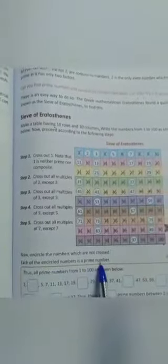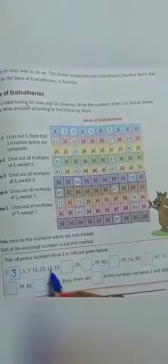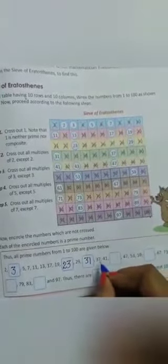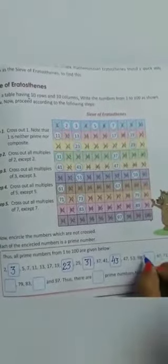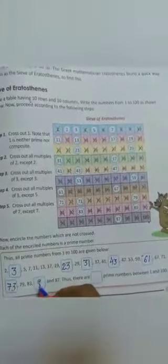Then each of the encircle numbers is a prime number. Which means now the numbers of 1 to 100, they all are prime numbers. Thus all prime numbers from 1 to 100 are given below. Now circle numbers you can write 2, then next 3, 5, 7, 11, 13, 17, then 19, then 23, then 29, then after 29, 31, 37, 41, 43, 47, 53, 59, 61, 67, 71, aur uske baad, 73, 79, 83, 89, and 97.